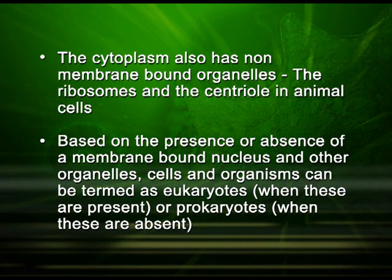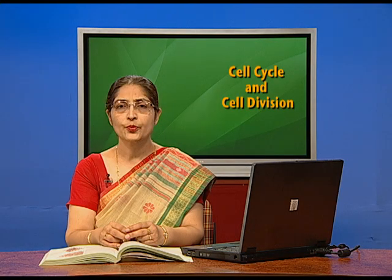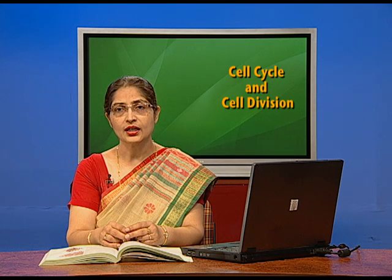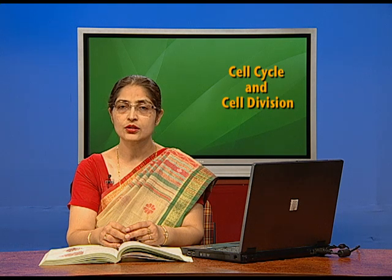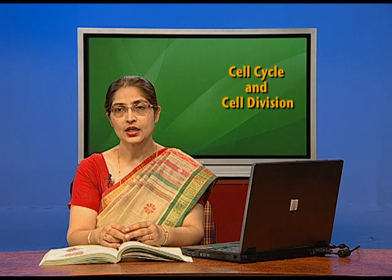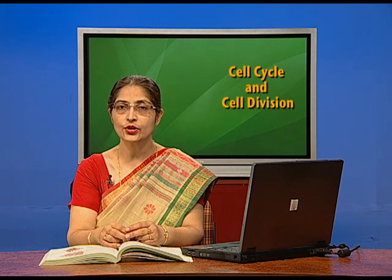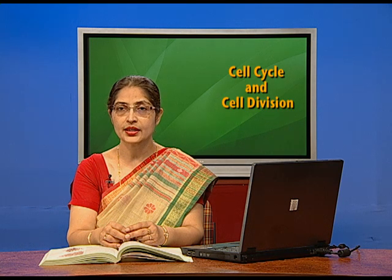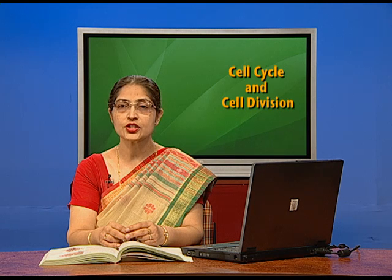Based on the presence or absence of a membrane-bound nucleus and other organelles, cells and organisms can be termed as eukaryotes when these are present, or prokaryotes when these are absent. Prokaryotic cells are represented by bacteria, blue-green algae also known as cyanobacteria, and mycoplasmas also known as PPLOs — the pleuro-pneumonia-like organisms. These cells vary greatly in shape, size and the functions they perform.